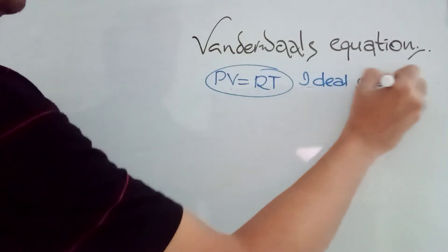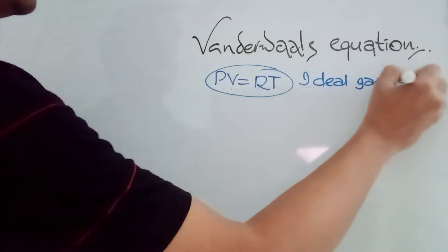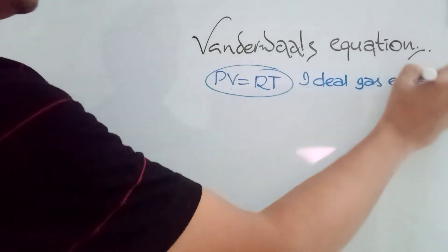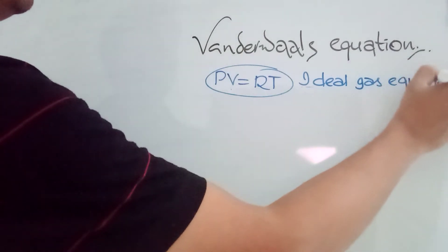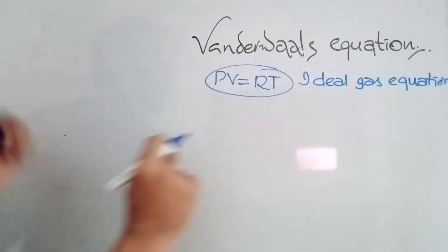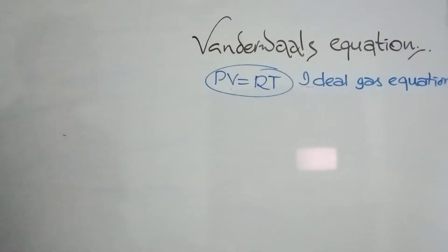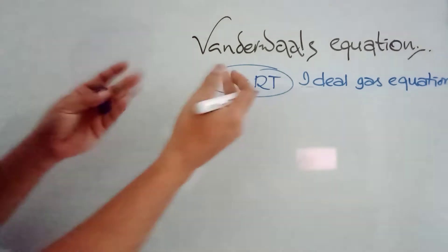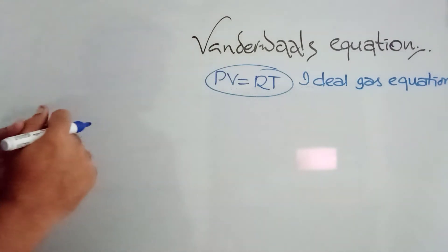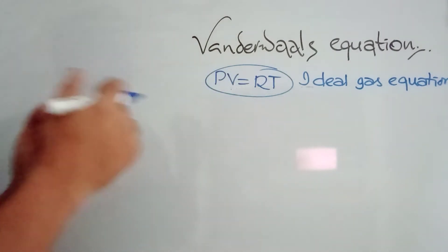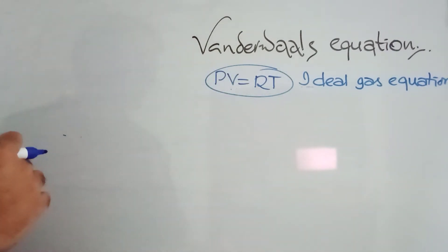As we know, all gases are real gases. There are no ideal gases. So we need to make some adjustments in PV = RT so that we can apply this to real gases.